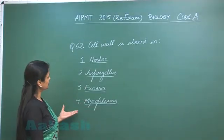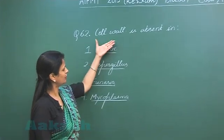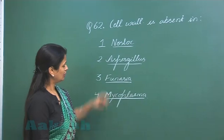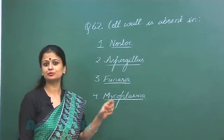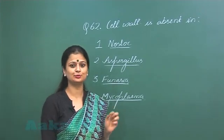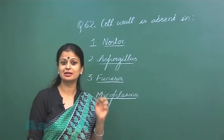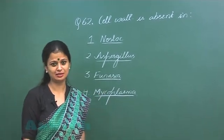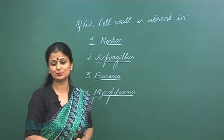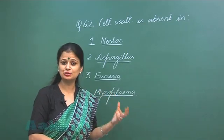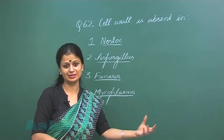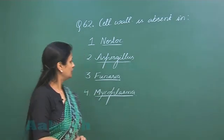Now in this question number 62 we have to look for the organism in which the cell wall is absent. You know Nostoc, that's a BGA blue-green algae. It's a bacteria known as cyanobacteria. Cell wall is present, it's a gram-negative bacteria. The cell wall is made up of four layers. Out of the four layers there is presence of peptidoglycan and lipopolysaccharides in some of the layers.